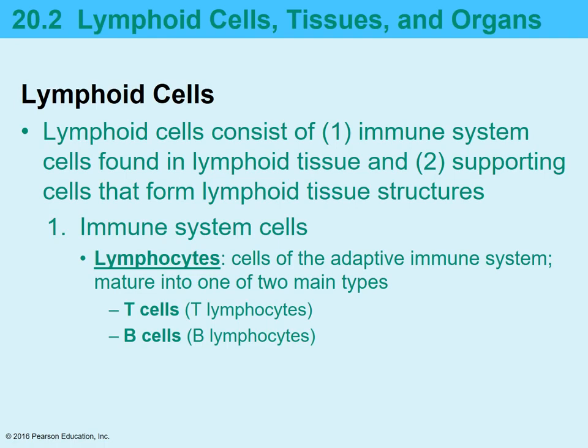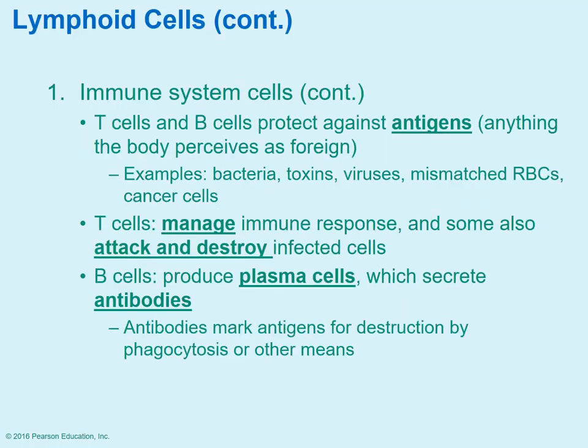Lymphoid cells are composed of one of two types: either immune system cells or supporting cells. The immune system cells are the lymphocytes, which are part of the adaptive immune system, and they can be subdivided into T lymphocytes or B lymphocytes — we call them T cells or B cells. Both T cells and B cells help protect against any foreign substance referred to as antigens, such as bacteria, viruses, and cancer cells. They will also detect foreign things that aren't necessarily harmful, such as pollen or animal dander.